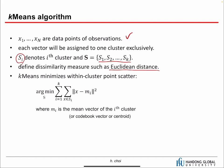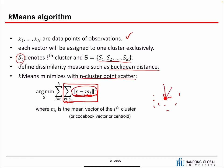K-means minimizes within-cluster point scatter. This term defines the within-cluster point scatter: for the i-th cluster, we have many samples, and we compute the average. This defines the distance between each sample and the average of that cluster. We want to minimize the sum of all these distances across all clusters.